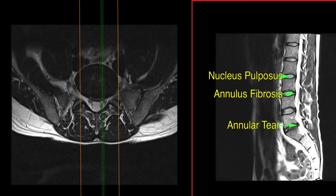I'm going to click over one more image where I've labeled the nucleus pulposus, which is the center of the disc. The back and the front of the disc has a strong, thick ligament called the annulus fibrosus. And then down here at the L5S1 level, there's a bulge to this disc and an annular tear in the posterior aspect of the disc.